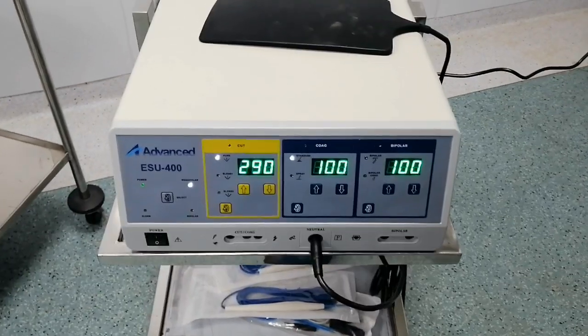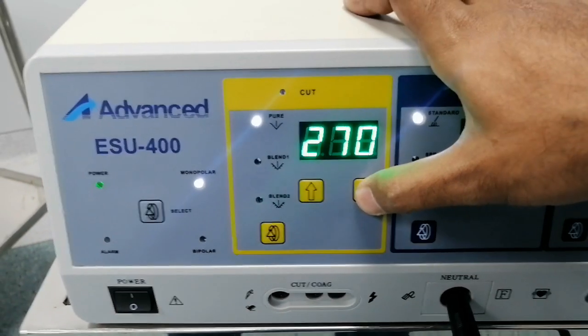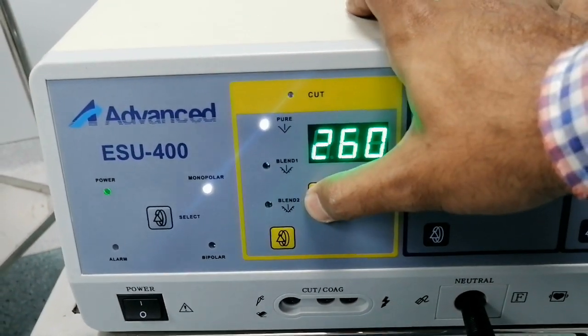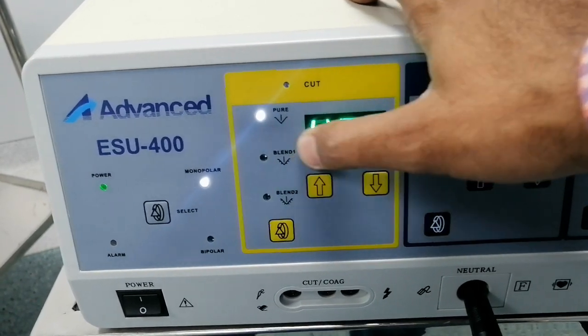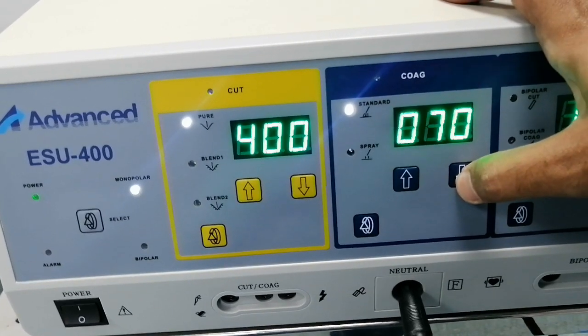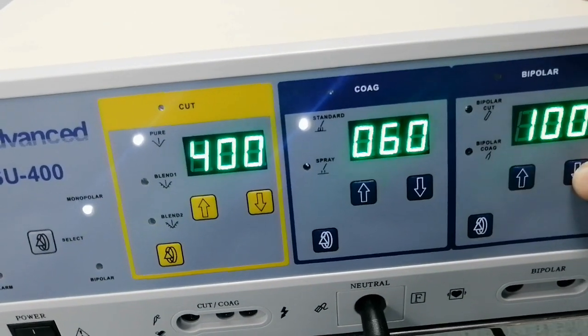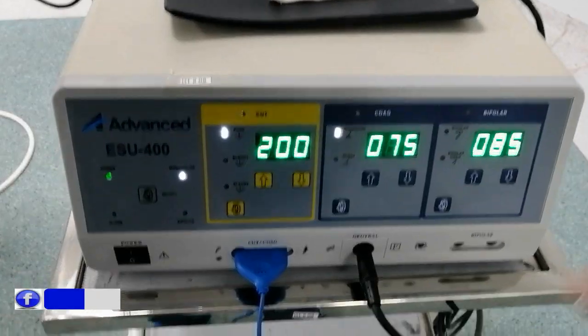The electrosurgical unit is an important tool in modern surgical procedures. It has transformed the way surgeries are performed, enabling faster and more precise procedures with reduced blood loss. However, as with any medical device, proper training and adherence to safety protocols are critical to ensure optimal outcomes for patients.